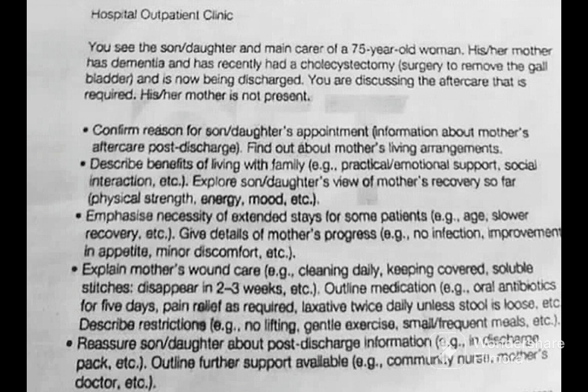This is a second degree role play card and you are talking to the patient's son or doctor. This is happening in a hospital outpatient clinic. The patient has undergone surgery and she has dementia, so you are talking regarding the post-operative home care. The setting is hospital outpatient clinic — you see the son or daughter, the main carer of a 75-year-old woman. His or her mother has dementia and has recently had a cholecystectomy — surgery to remove the gallbladder — and is now being discharged. You are discussing the aftercare required. The mother is not present during the conversation.